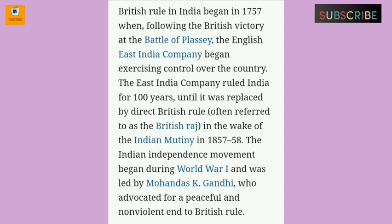British rule in India began in 1757 when, following the British victory at the Battle of Plassey, the English East India Company began exercising control over the country. The East India Company ruled India for 100 years until it was replaced by direct British rule, often referred to as the British Raj, in the wake of the Indian Mutiny of 1857 to 1858.